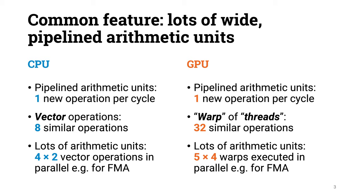Let's now compare CPUs and GPUs by looking at what kind of parallel computing resources are available. Both CPUs and GPUs have got lots of pipelined arithmetic units. In the best case, if a code manages to keep all arithmetic units busy, each arithmetic unit can initiate one new operation per clock cycle. In both devices, the arithmetic units are not only pipelined but also wide. On our CPU, you can use vector operations to do 8 similar operations in parallel, while on our GPU the arithmetic units are even wider — you can do 32 similar operations in parallel.